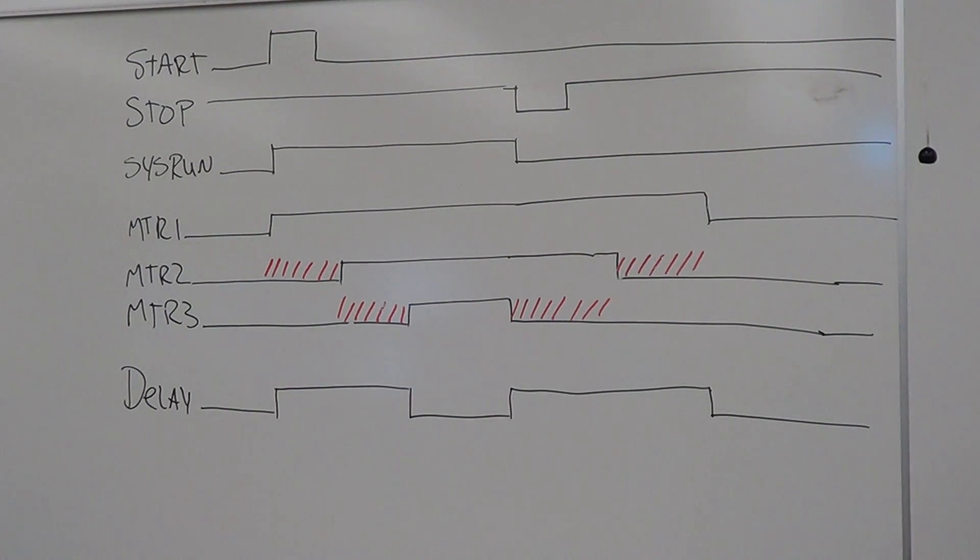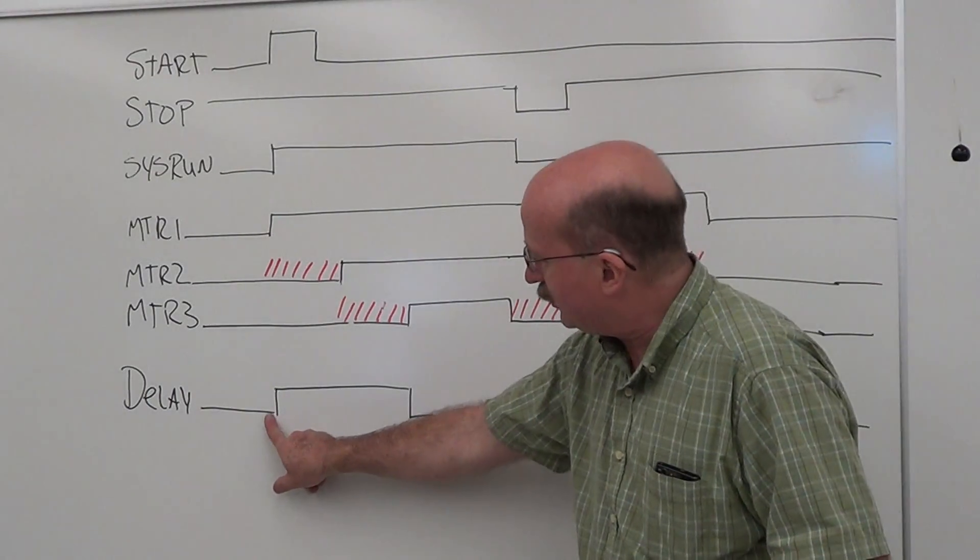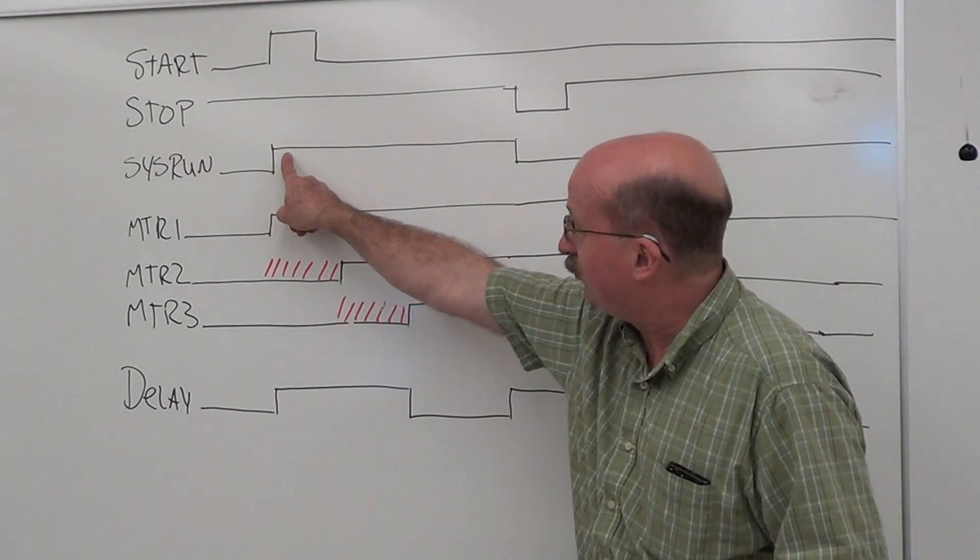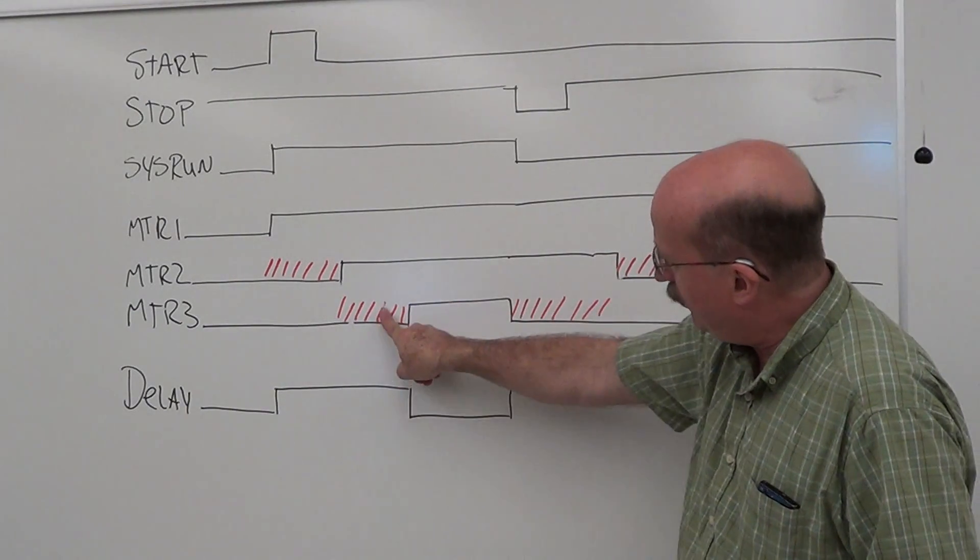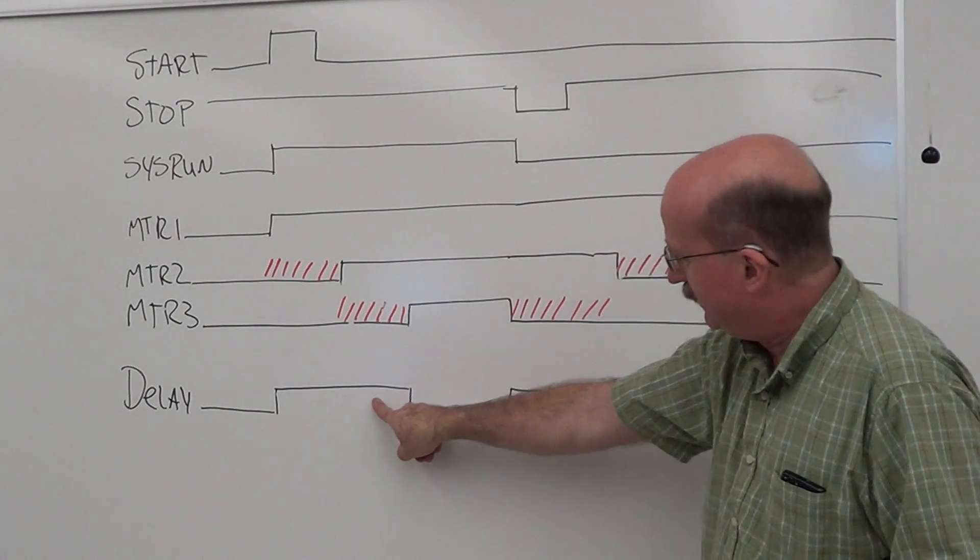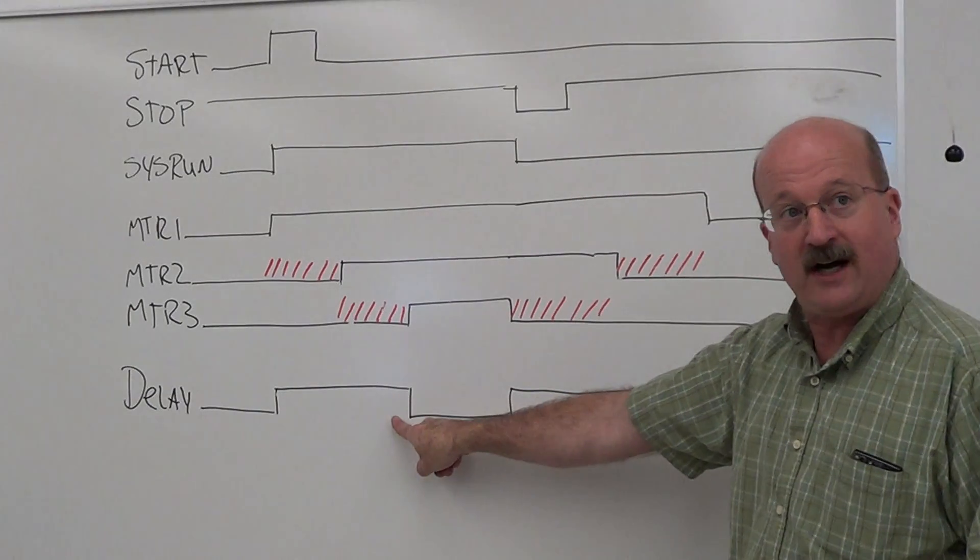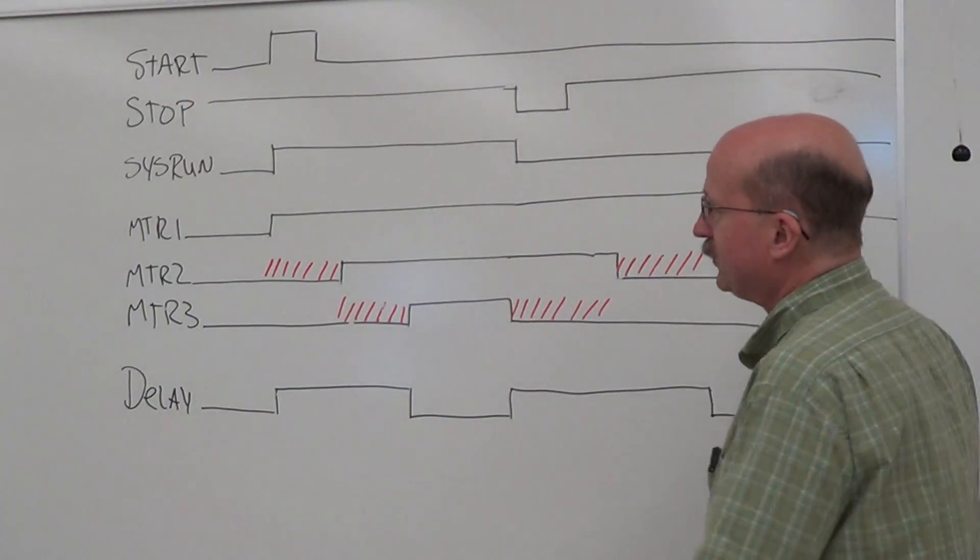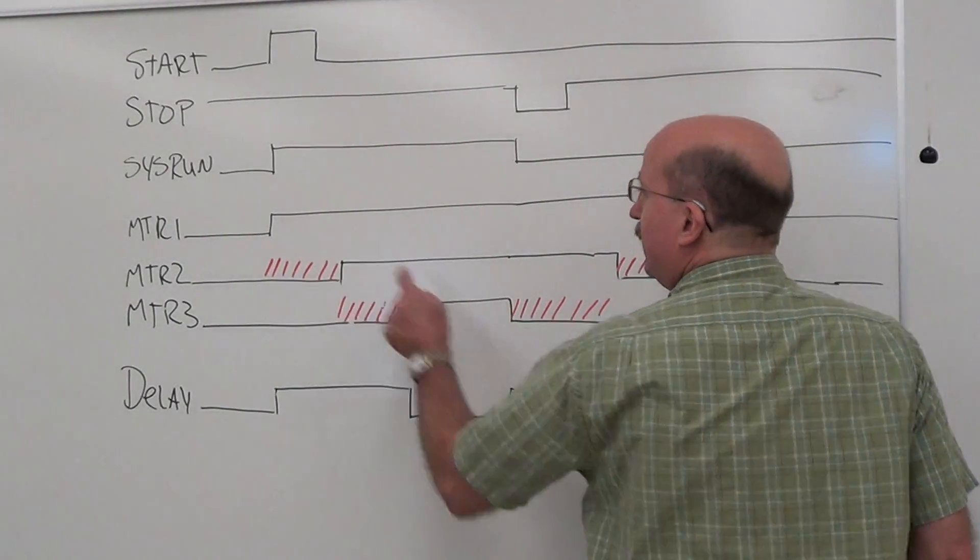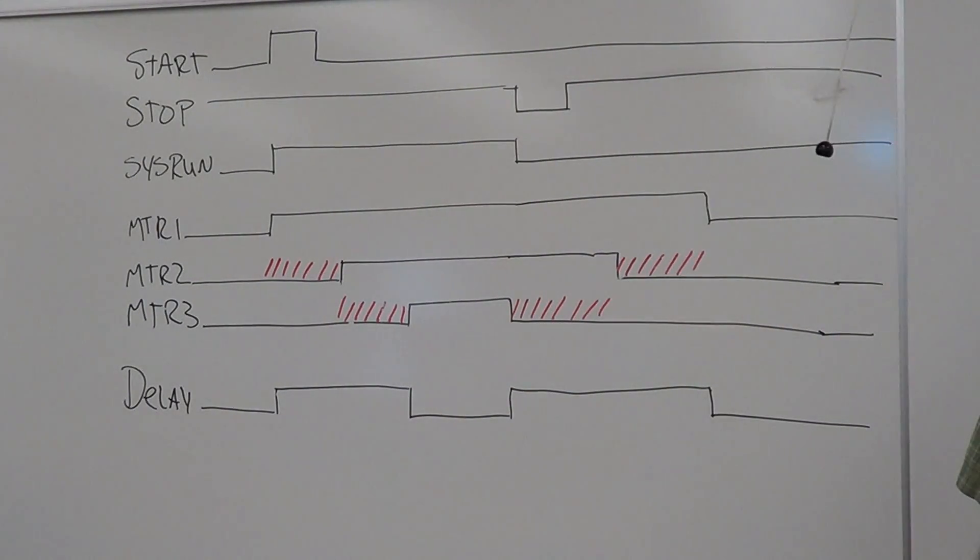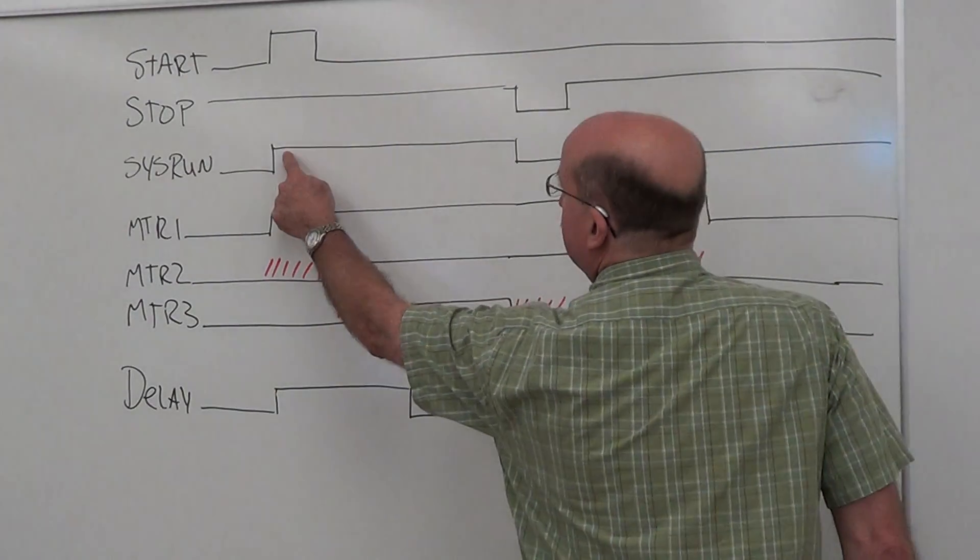Delay time later, motor two will turn on. Delay time later, motor three will turn on and the system will be all running at that point. While the motors are starting up, when sys run is on and motor three is off, during that time that's our on-delay period.